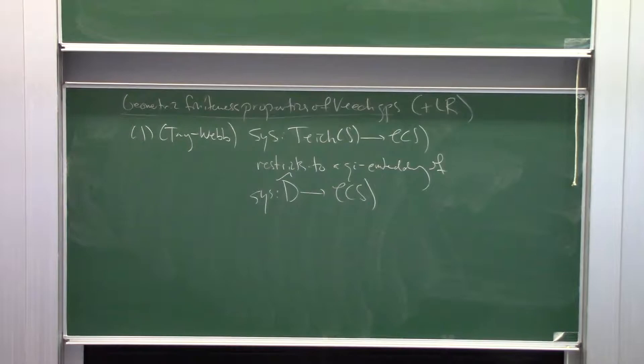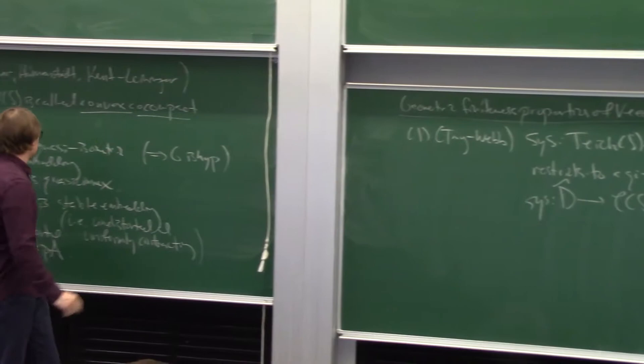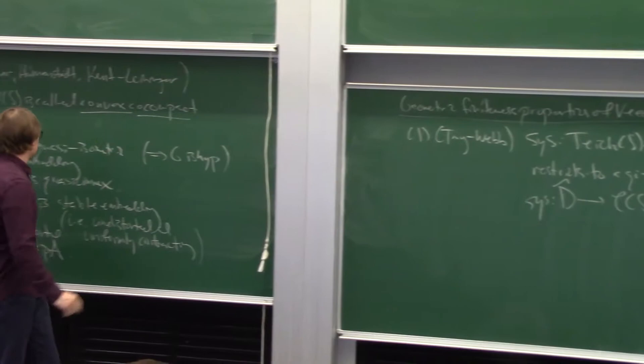The coned-off Cayley graph of our Veech group quasi-isometrically embeds into the curve graph. Saying that QI embeds into the curve graph is a relative version of saying that the orbit map for a convex cocompact group is quasi-isometric in the curve graph.